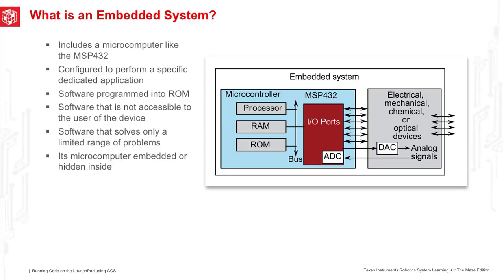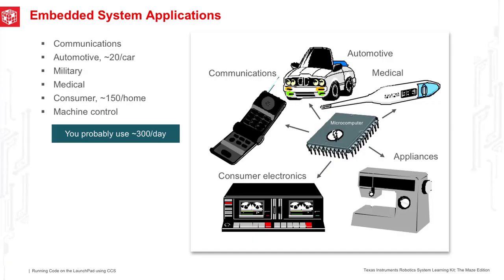So what is an embedded system? An embedded system is a system that has a number of components, and one of those components is going to be the microcontroller — the MSP432 in this case. It's going to have electrical, mechanical, chemical, sensors, circuits, and all together the hardware and software is going to solve a specific purpose. We might be racing, we might be solving a maze, we might be following a line. The entire system will be dedicated for a single purpose, and all the components will work in synchrony with each other to solve that problem. The software is not going to solve every problem in the world, but that particular problem. The word embedded just means it has a microcontroller hidden inside.